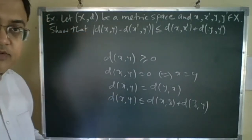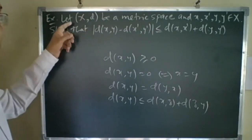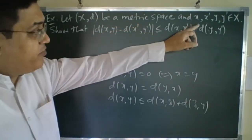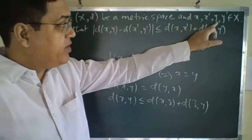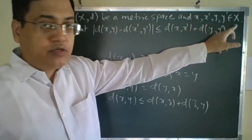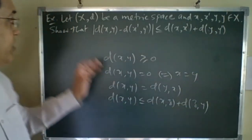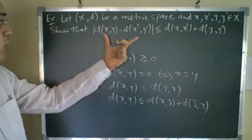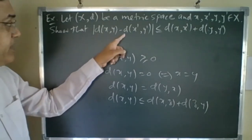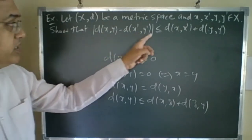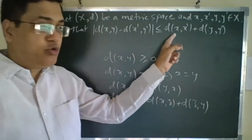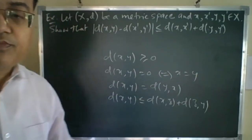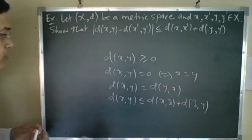We will solve the example. Let (X,d) be a metric space and four points x, x', y, y' are points in X. Then we have to show that |D(x,y) − D(x',y')| ≤ D(x,x') + D(y,y').